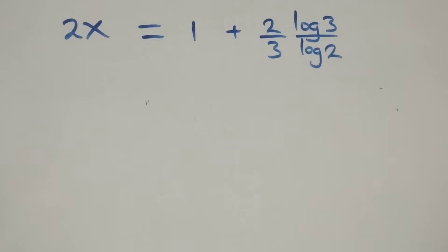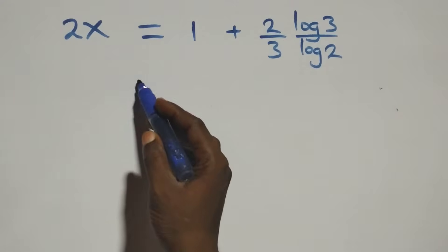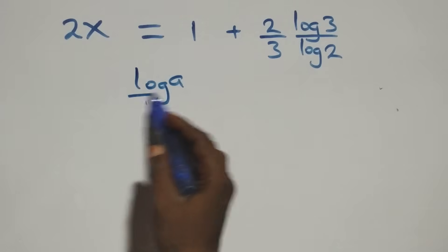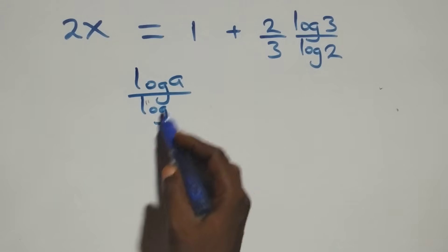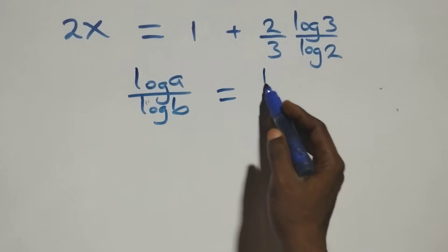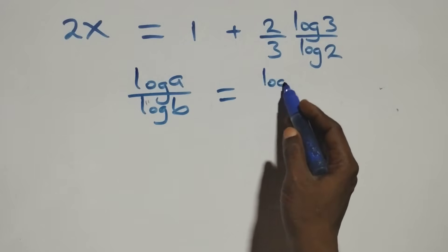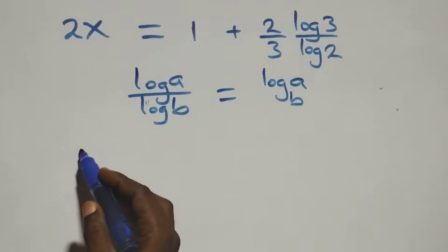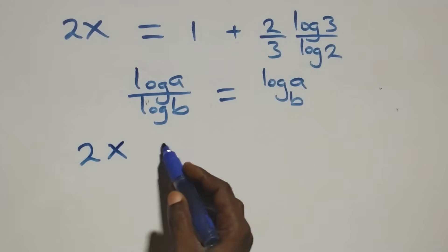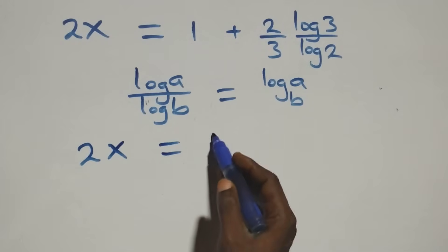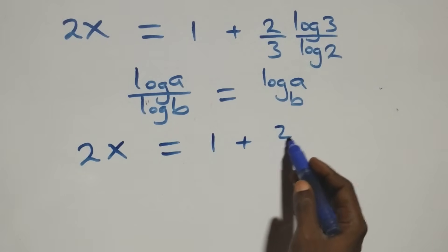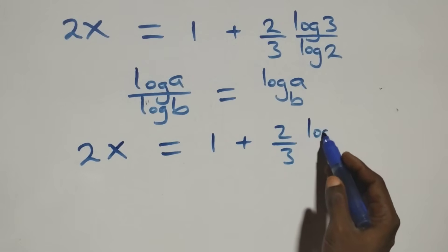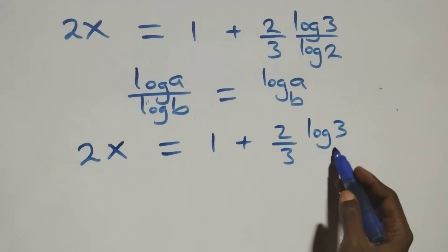Next, we apply the change of base rule: log a over log b equals log a to base b. So log 3 over log 2 becomes log 3 base 2. Therefore, 2x equals 1 plus two-thirds times log 3 base 2.